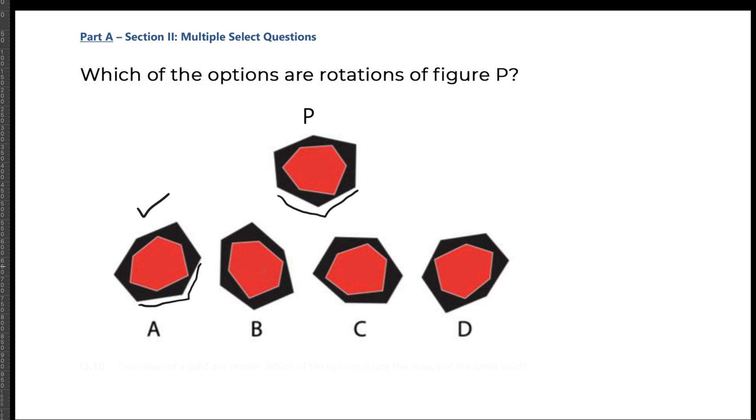When it comes to option B, you can see the shape and the same shape will be here itself. But you can see the interior shape, the red color, is completely different than you see. This won't be the option.